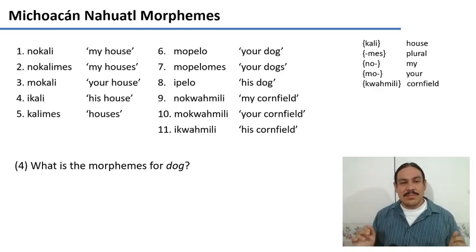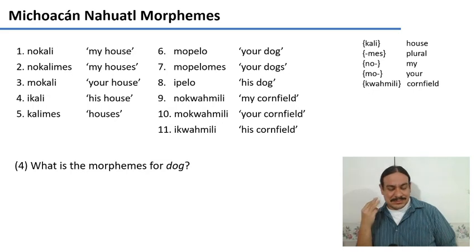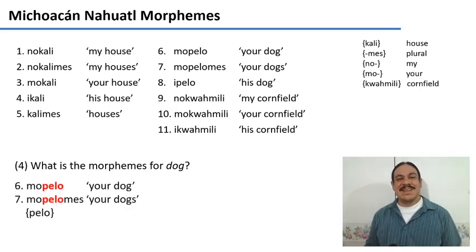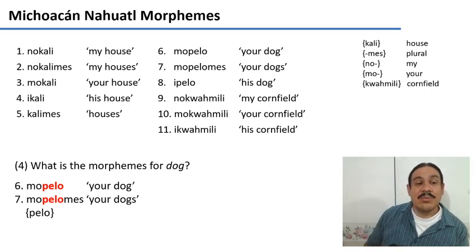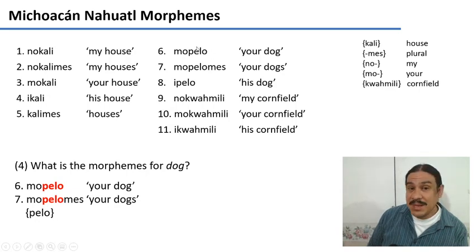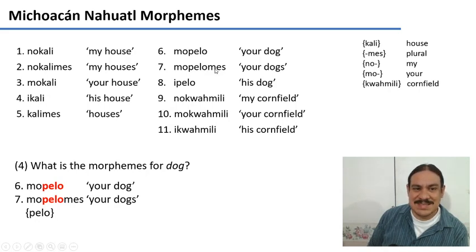You give it a try — what's the morpheme for 'dog'? Please pause the video. We can look at numbers six and seven, for example — 'your dog' and 'your dogs.' We have explained the element 'mo,' which means 'your,' and the element 'mes,' which means the plural. The only other element we have left is 'pelo.' So it makes sense to have a prefix, then a root, then the plural suffix: 'mo-pelo-mes.' So 'pelo' is probably the root for 'dog.'